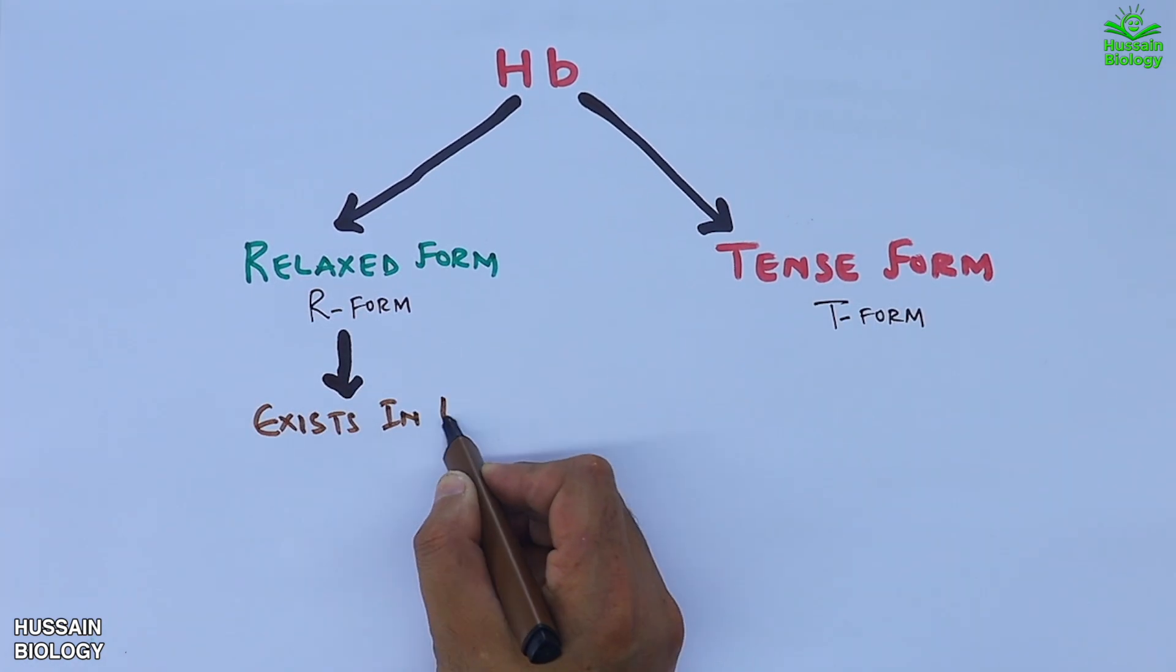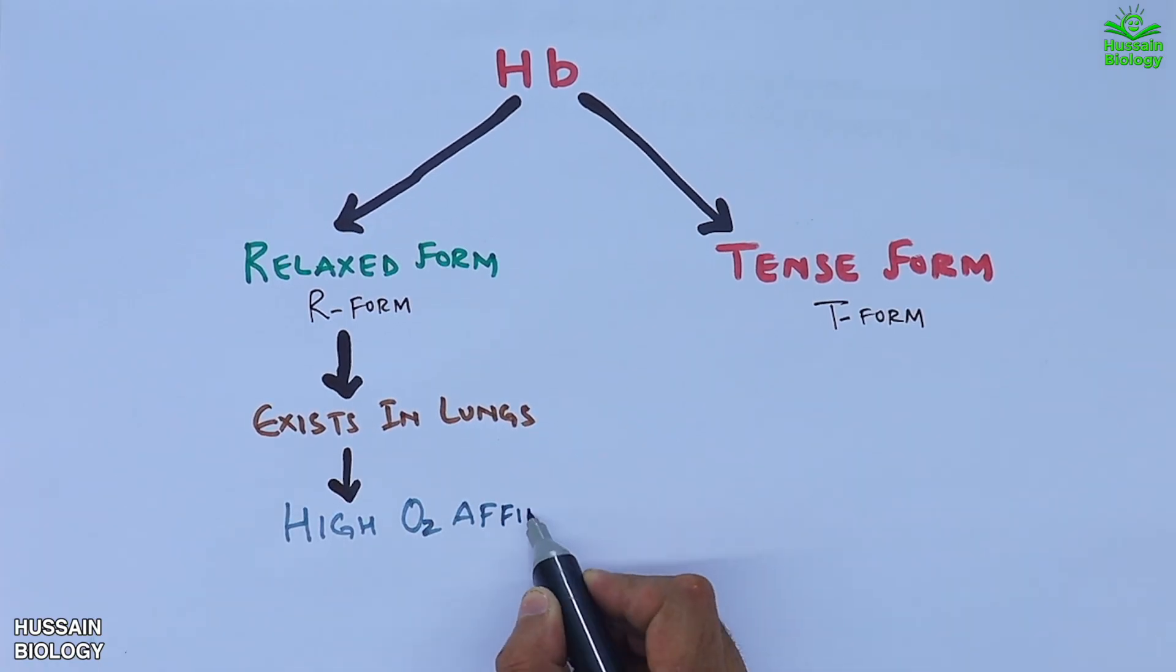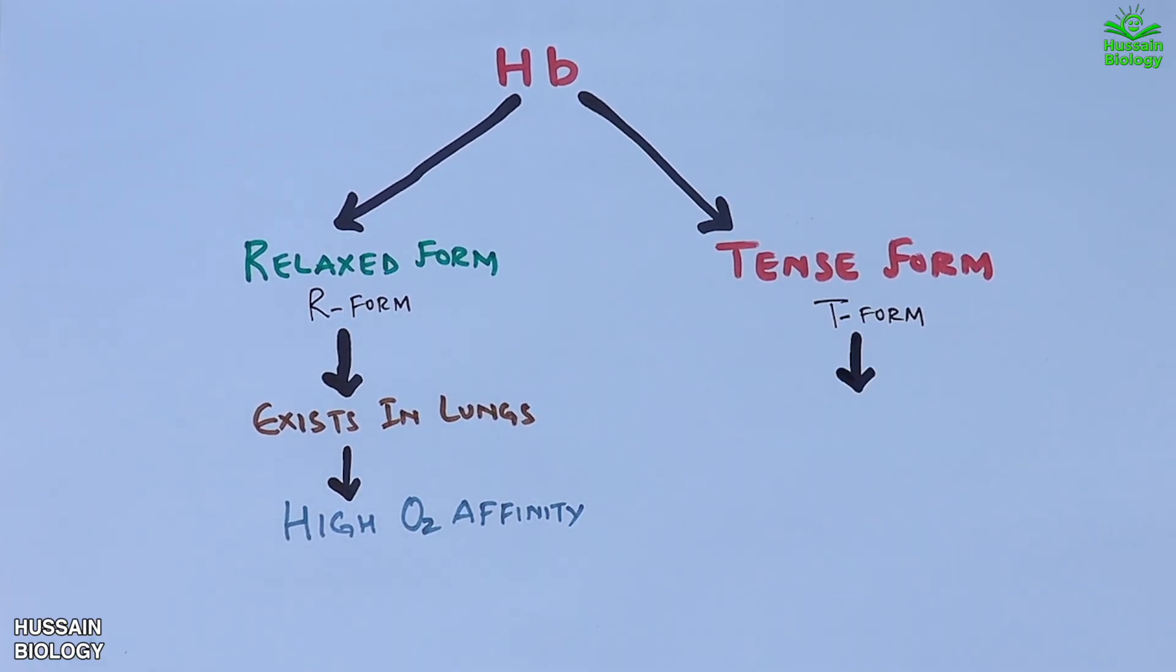The relaxed form exists in lungs and has high oxygen affinity, whereas the tense form exists in tissues and has low oxygen affinity.